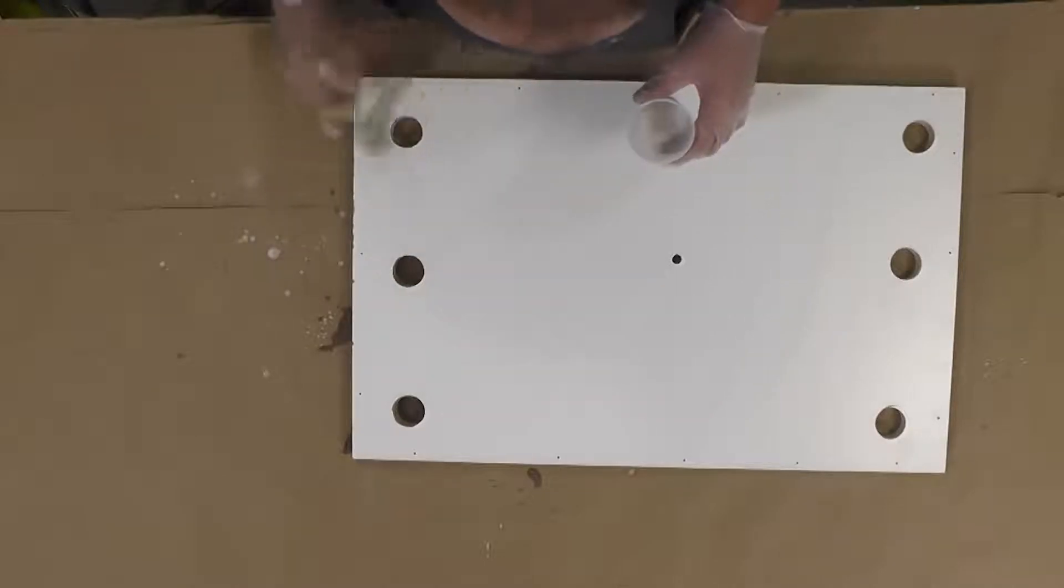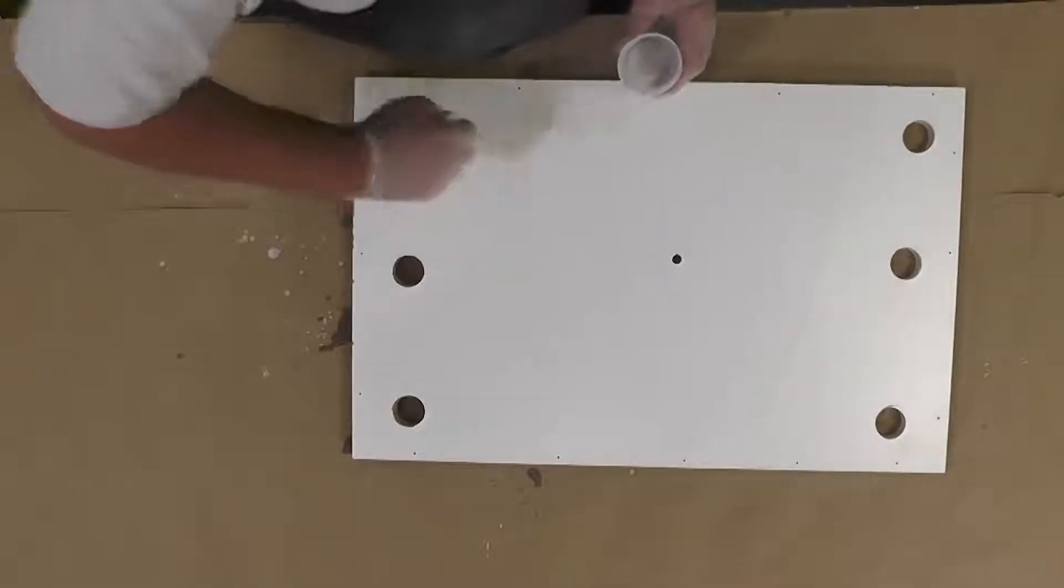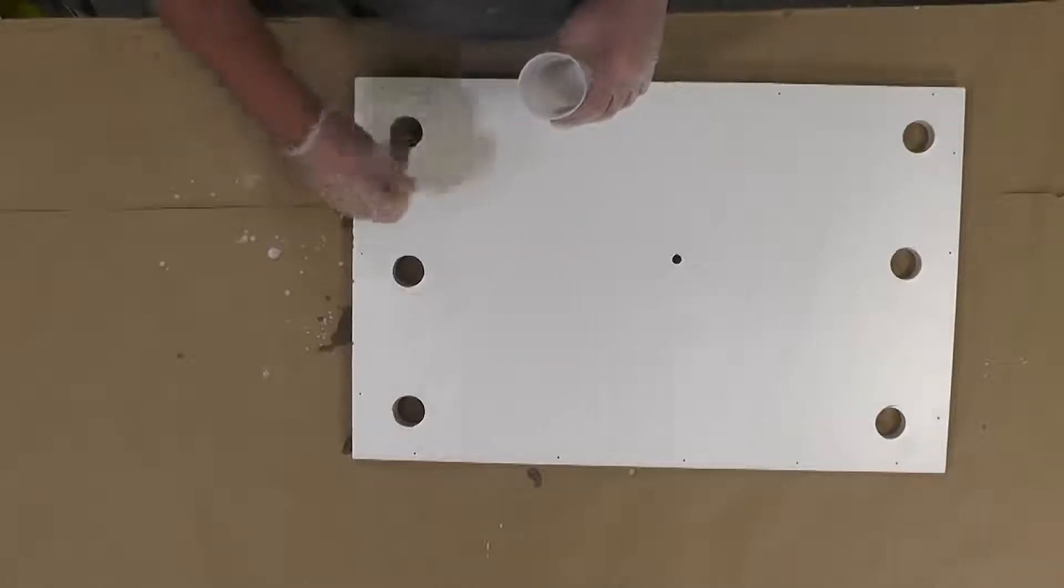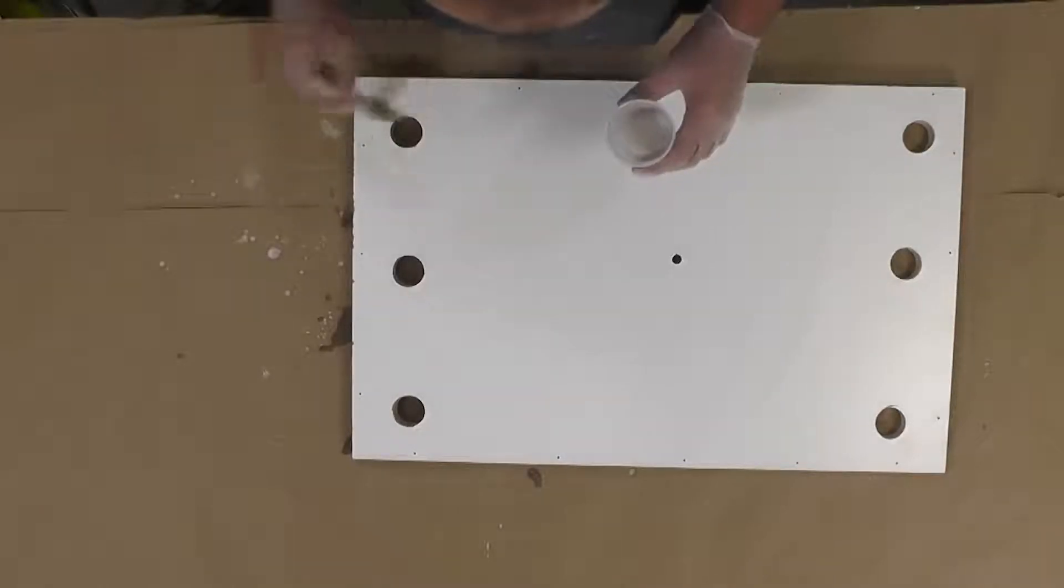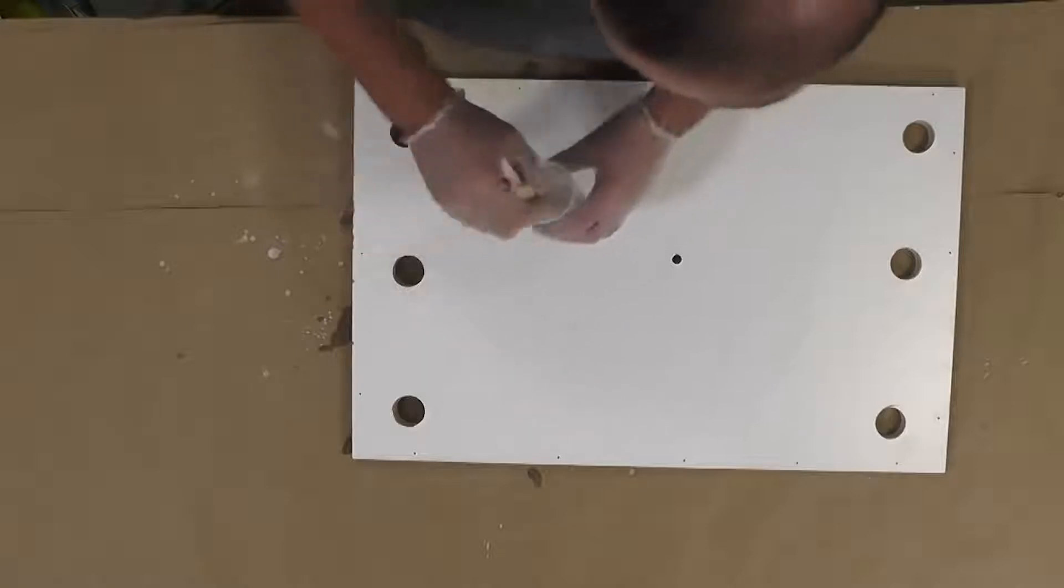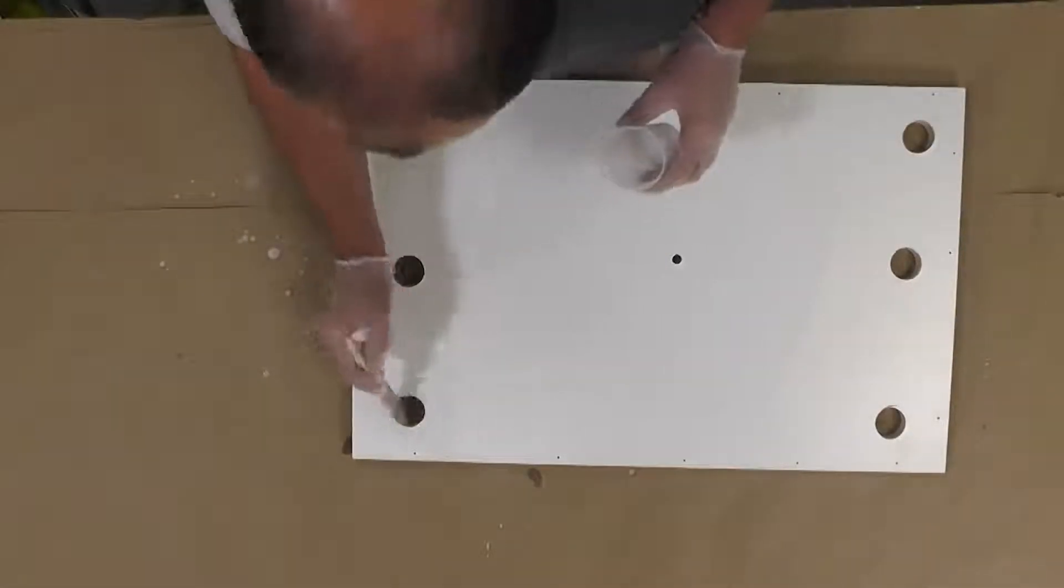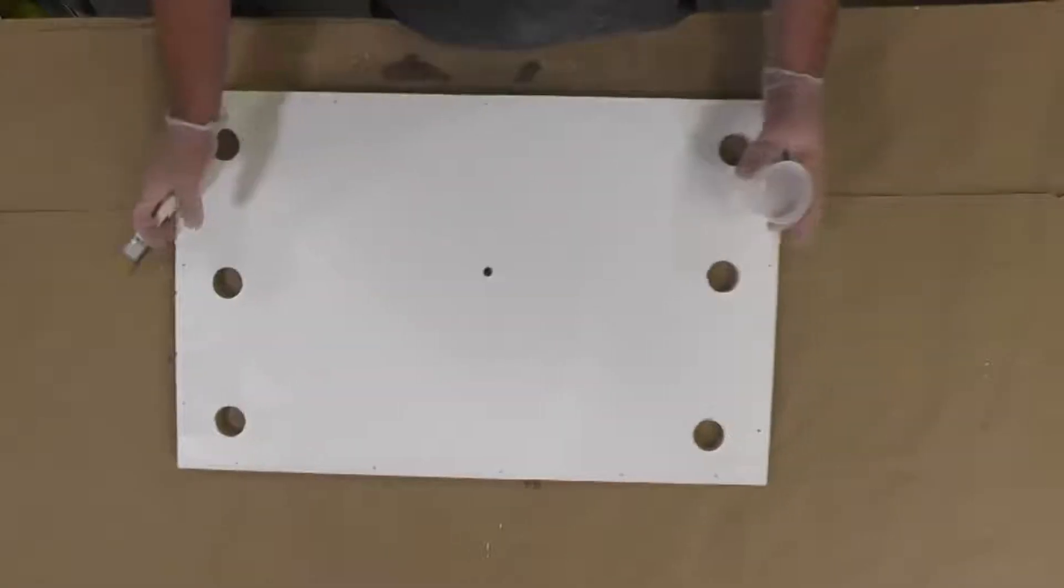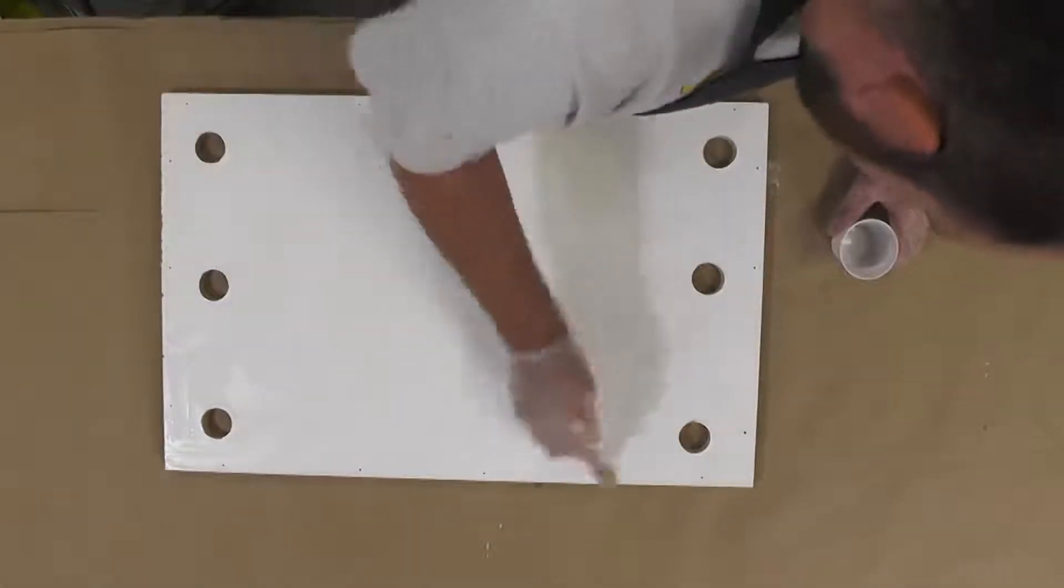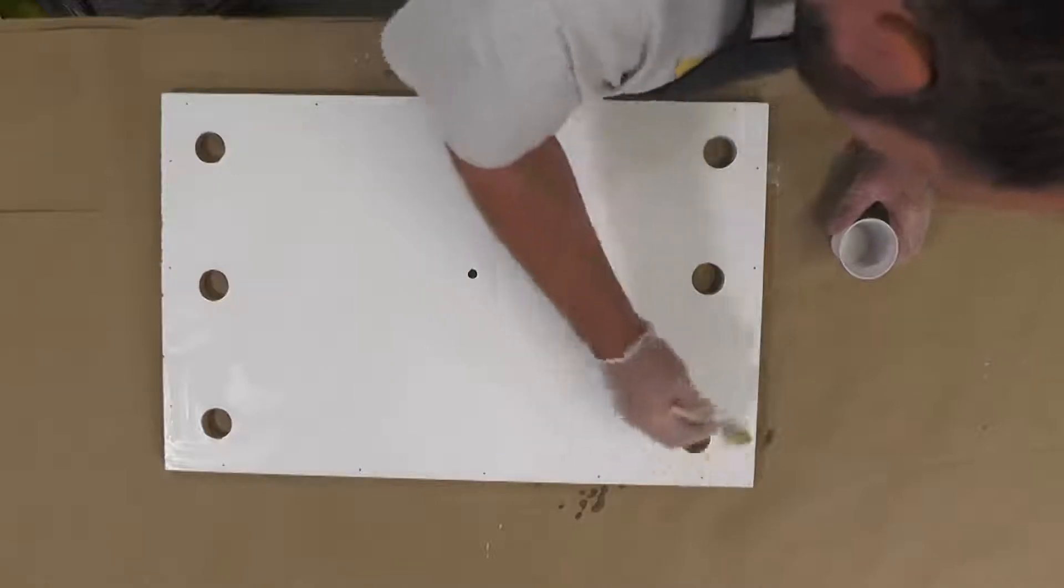Before we start mixing our material, it is very important that you put a layer of the Ease Release 2831 over any surfaces that the foam will be touching and you don't want it to stick to. That includes the vent holes, that's where the foam is specifically going to get soaked in and stuck in. So it's very important to release any surface where the foam is going to be in contact with.